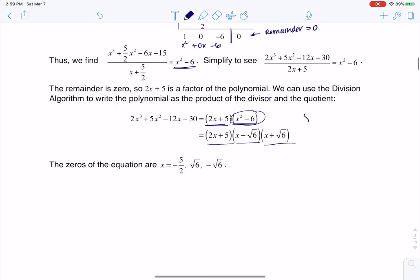Using the zero product property, I would say either 2x + 5 had to be 0, x minus root 6 had to be 0, or x plus root 6 had to be 0. And that's where I get the three zeros of my equation. If I was graphing this, these would be x-intercepts, but I wasn't asked to do that, so I'm going to leave them as zeros.